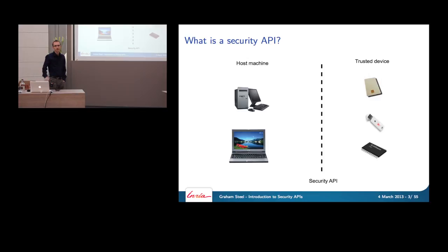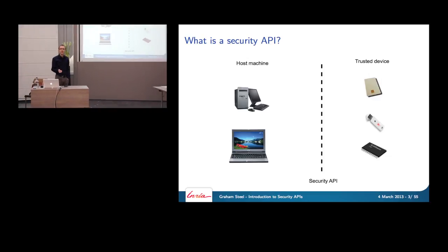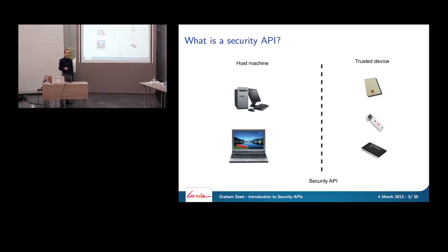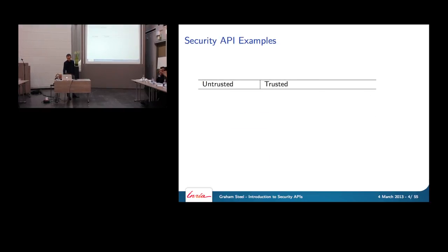The attacker can compose commands in unexpected ways, do some offline operations, and try to get the secrets out of the device — but he can't physically touch the memory or change the software running on the device. My challenge is to design an API that allows the host machine access to the trusted device's services, but so that even if the attacker takes control of the host, he can't retrieve secrets.